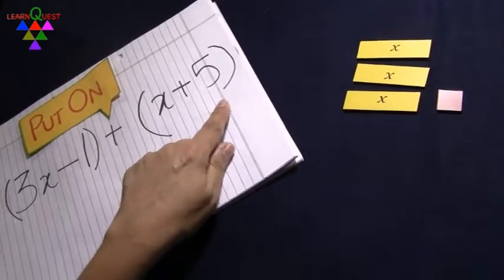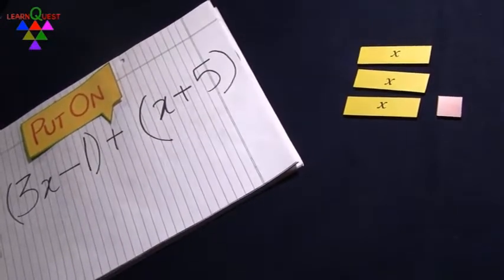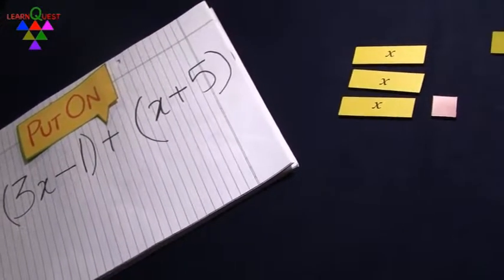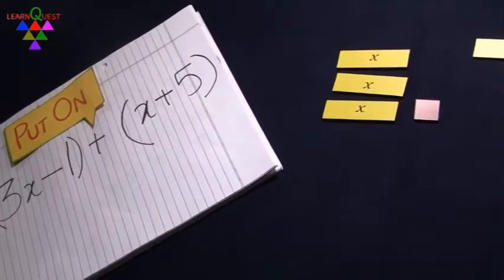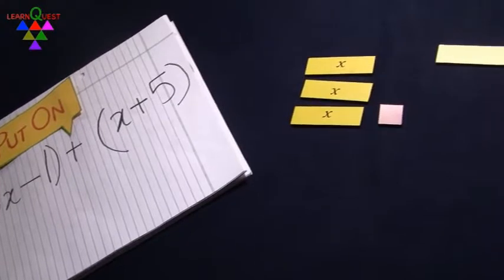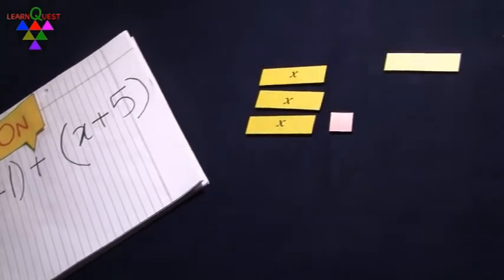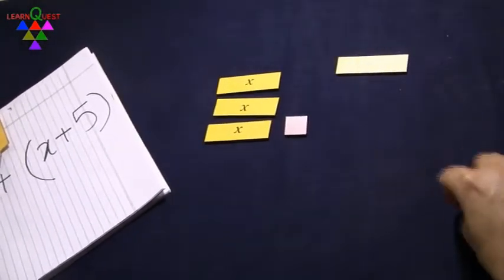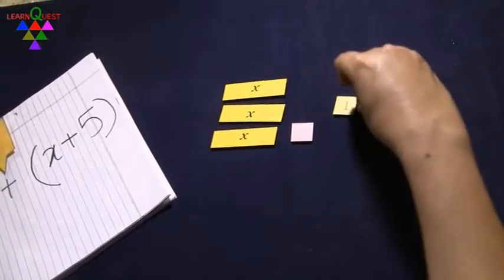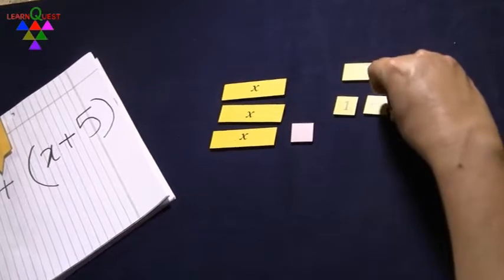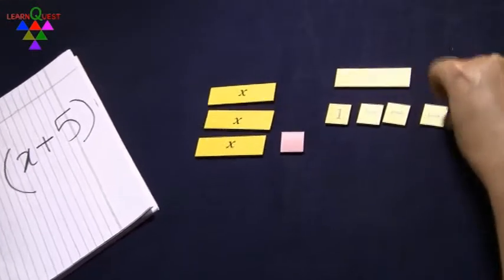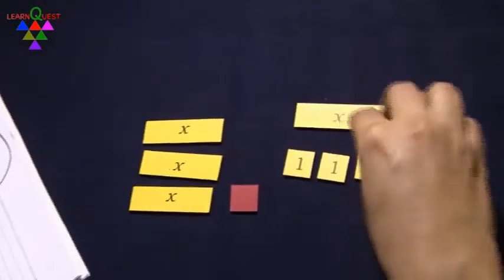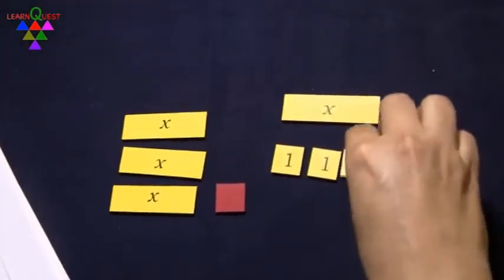What do I have to add? The second algebraic expression, which is x plus 5. So I take 1x and 5 yellow squares, and I put that on the table.